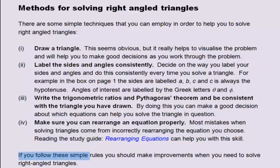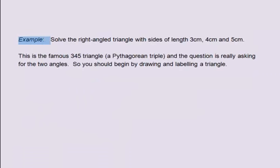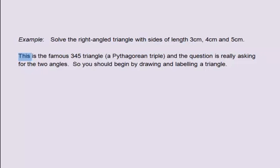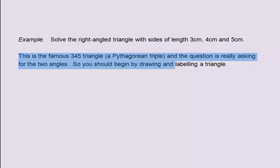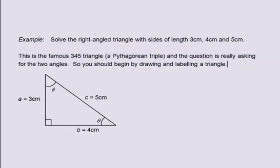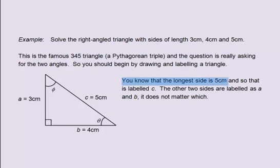If you follow these simple rules, you should make improvements when you need to solve right-angled triangles. Example. Solve the right-angled triangle with sides of length 3cm, 4cm and 5cm. This is the famous 3-4-5 triangle, a Pythagorean triple, and the question is really asking you for the two angles. So you should begin by drawing and labelling a triangle. Here it is. You know that the longest side is 5cm and so that is labelled c. The other two sides are labelled as a and b.